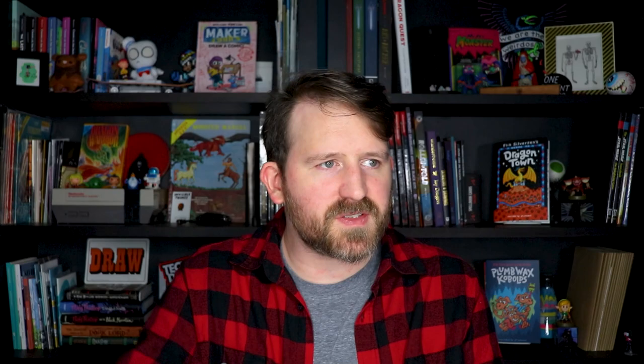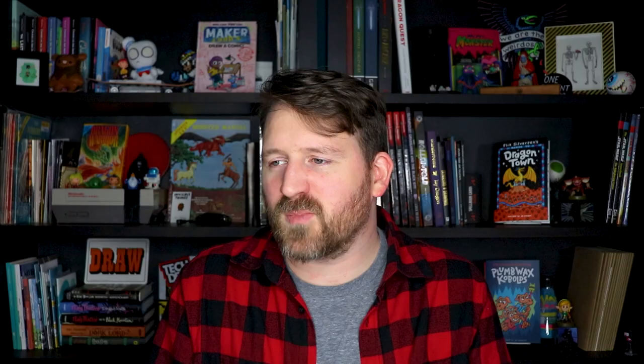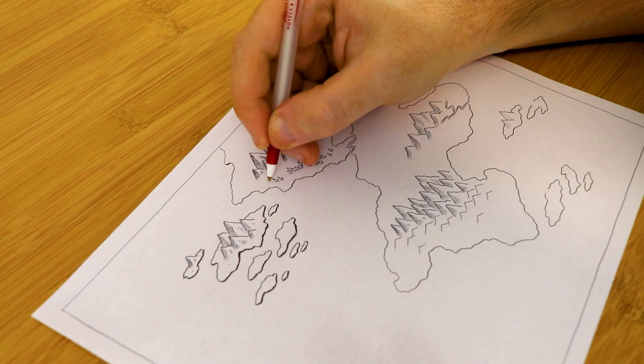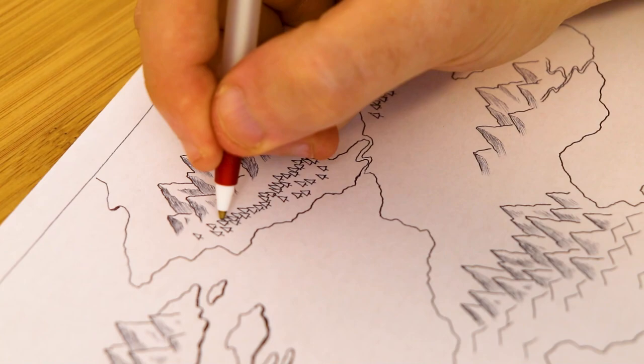So once the mountains are done, I'm going to move on to the forest. But I want to get really detailed with these forests. So I'm drawing each and every little tree. I'm starting with just the triangle pine trees and then I'll move on to the round trees. And then I'll eventually add in some jungly palm trees at the bottom as well. But now that I'm working on these forests, I've quickly realized the limitations of this ballpoint pen.